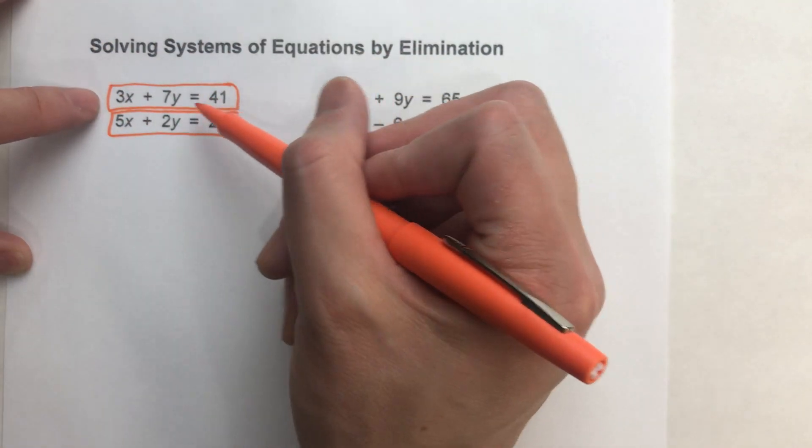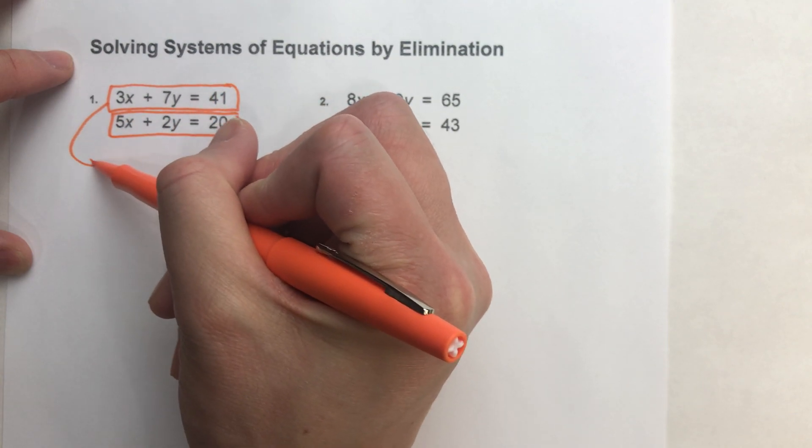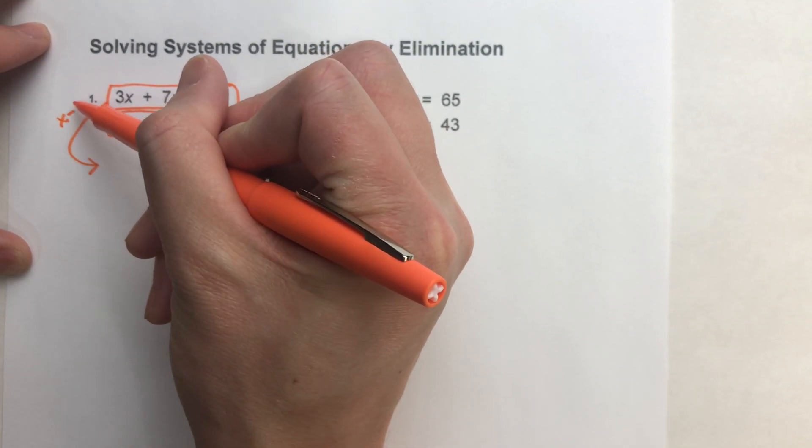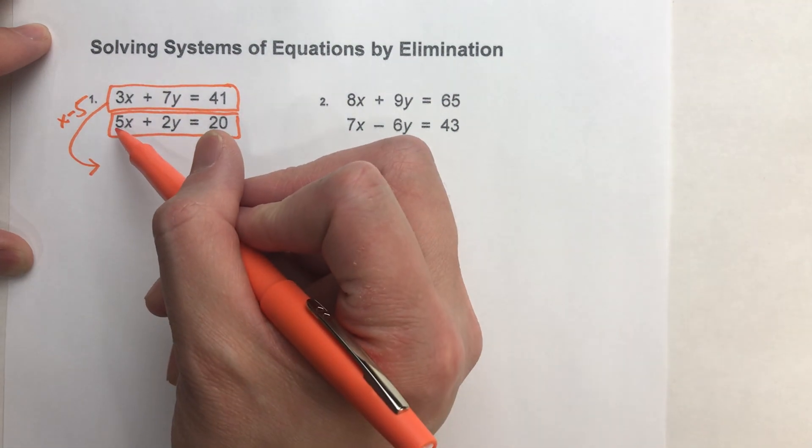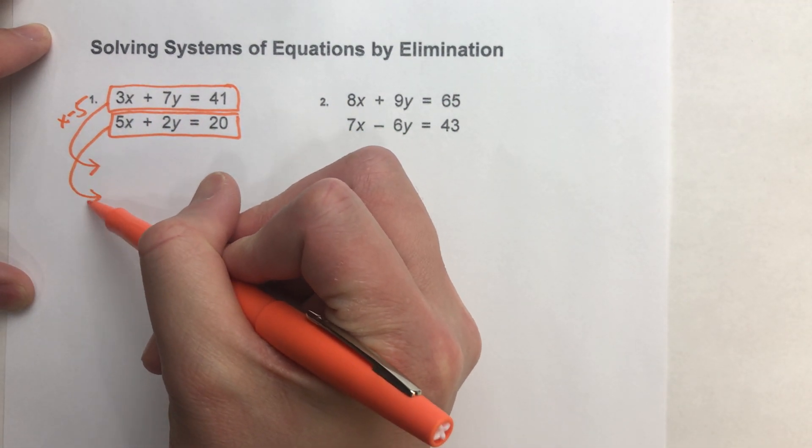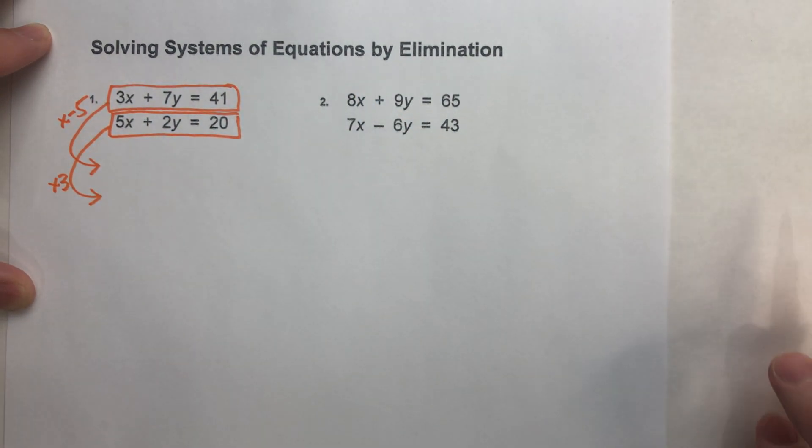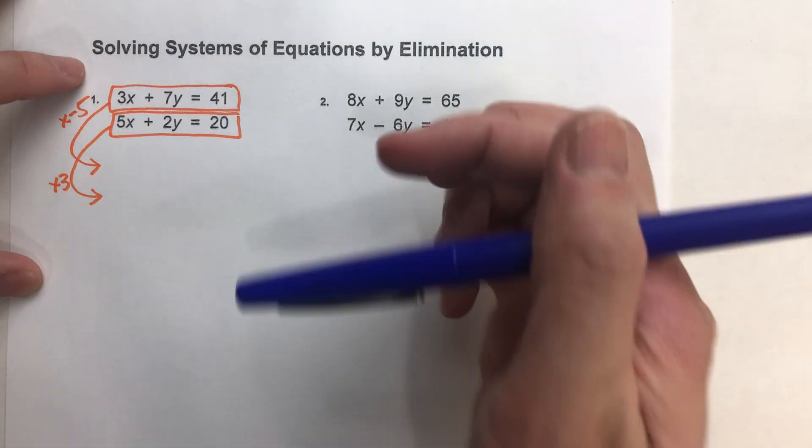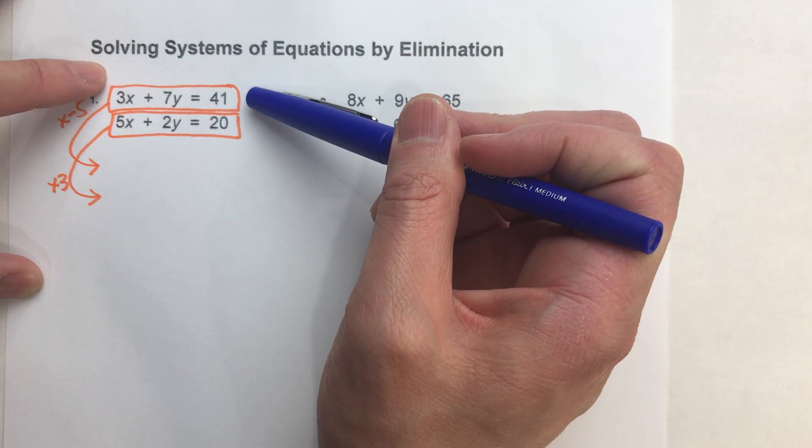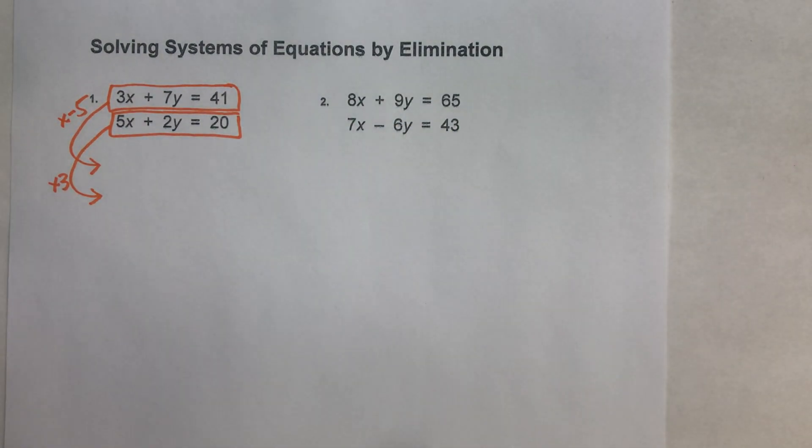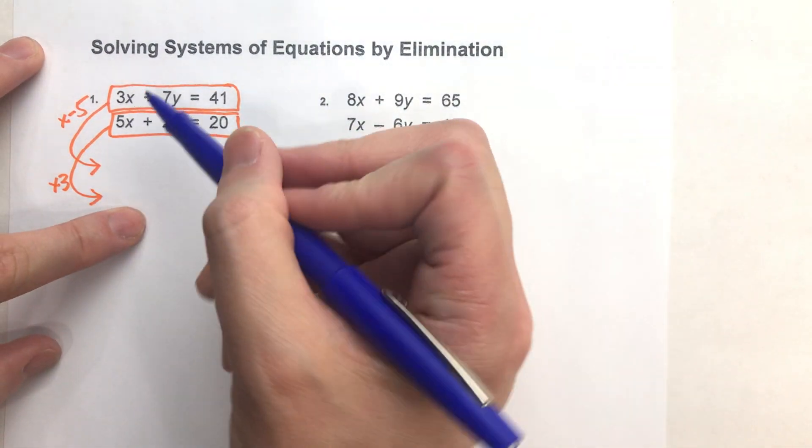So I'm going to multiply this top equation by negative 5, and I'm going to multiply this bottom equation by 3. So that I'm going to end up with negative 15x from this first one, and I'll end up with a positive 15x from the second one. So let's see that.